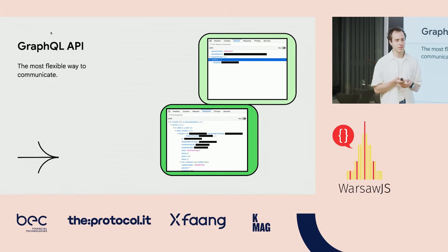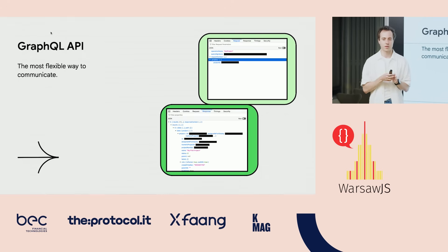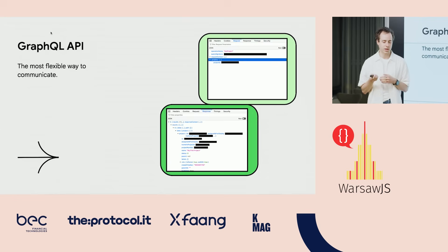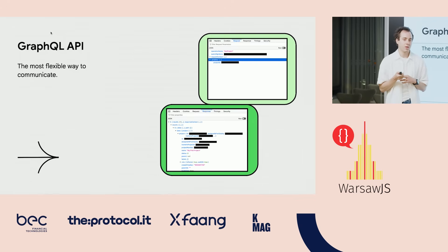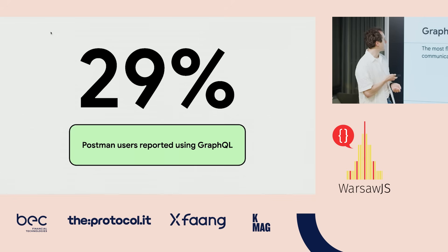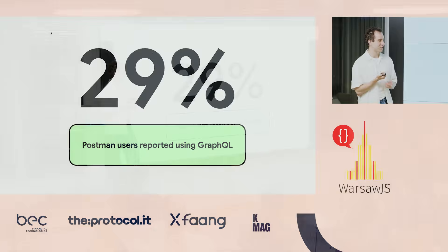Then came GraphQL API, developed by Facebook. The problem with REST API is that when you have an endpoint, you can just do something, but when you need to change something you have two options: either create a new endpoint, or modify the existing one. Yet modifying existing will load much more data than needed, and creating a new one is work from the engineering team — no one likes it. So Facebook introduced GraphQL. The idea is simple, and it's used by almost 30%, so it's growing.